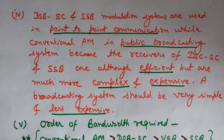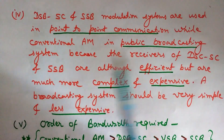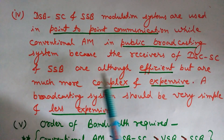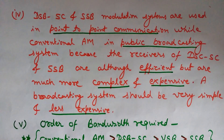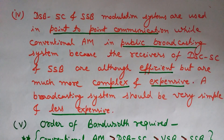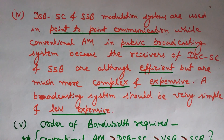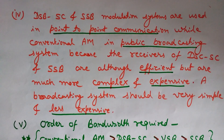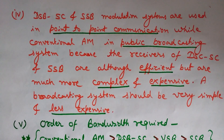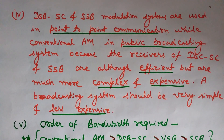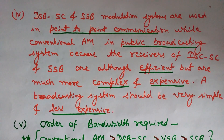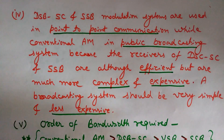Fourth, DSB-SC and SSB systems are used in point-to-point communication, while conventional AM is used in public broadcasting. The receivers for DSB-SC and SSB are more complex and expensive, so for public broadcasting serving millions of people inexpensively, conventional AM is preferred. For a single transmitter with few receivers, DSB-SC or SSB is used.